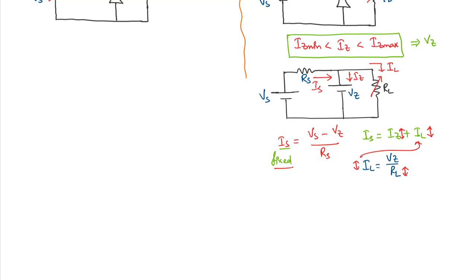So let me write that expression here: Is is a fixed quantity. When Iz is higher value Iz max then Il will be minimum value because Is is a fixed quantity. When RL is at higher value then Il will be at lower value. When Il is minimum, Iz should be maximum.